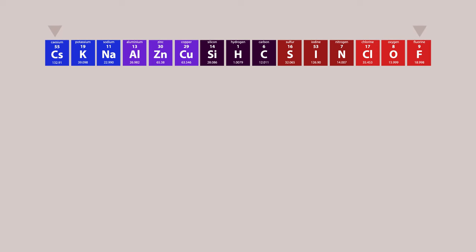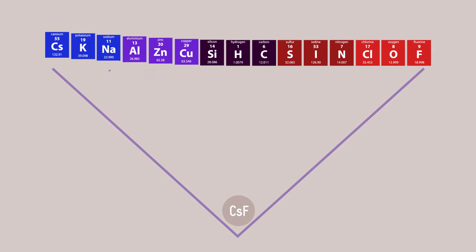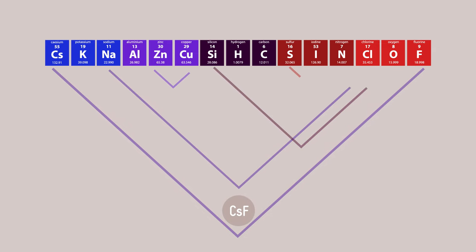When these two extreme elements react they form the stable white salt caesium fluoride. We now have a triangular space where all other combinations of elements can be situated. Elements are along the top and the space will be filled with compounds like brass, sulfur dioxide, sand and salt.